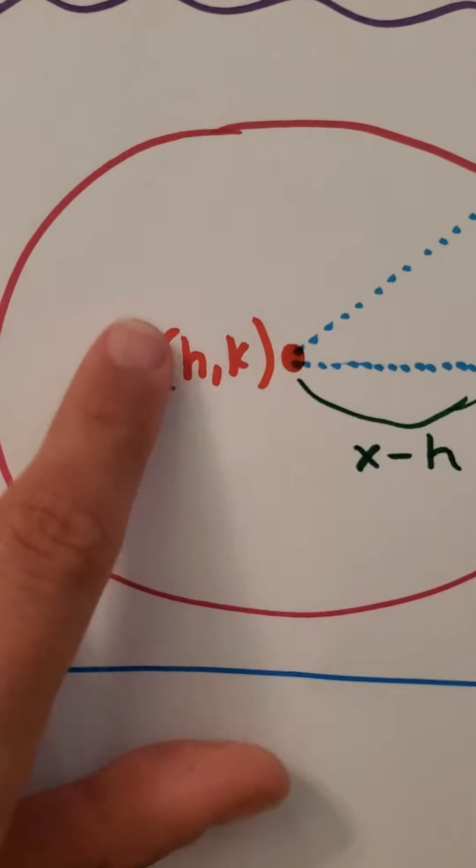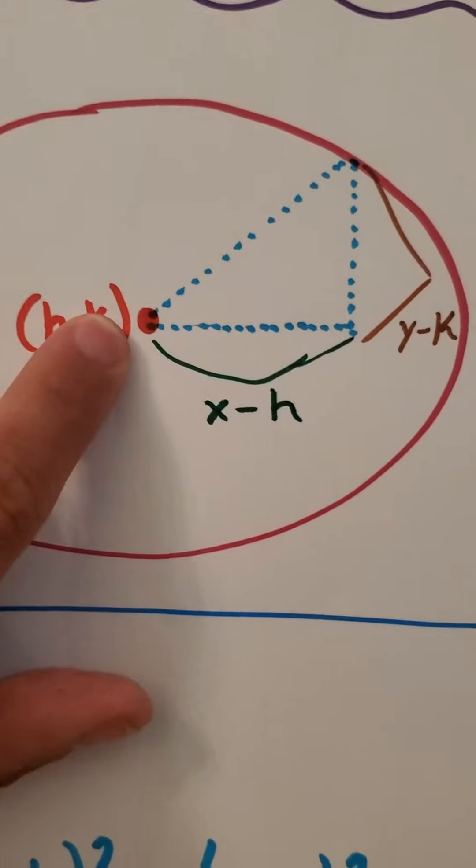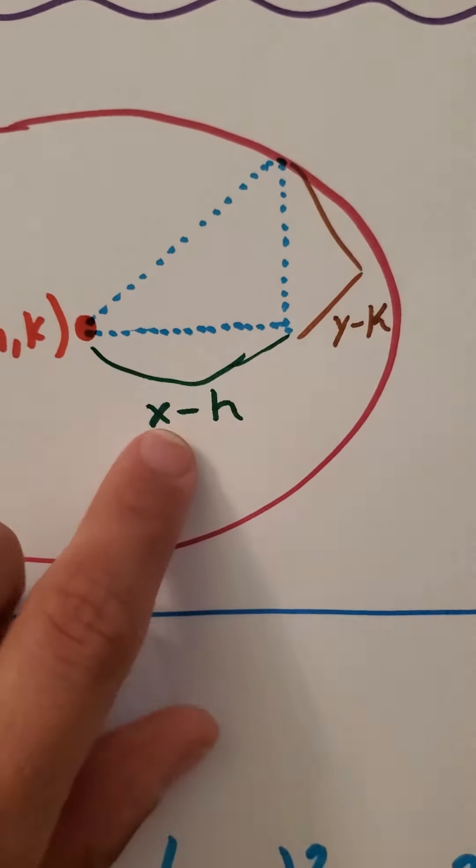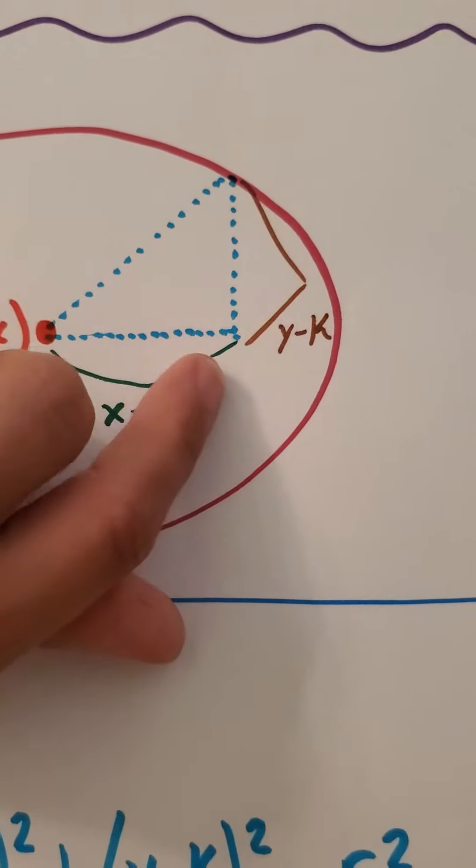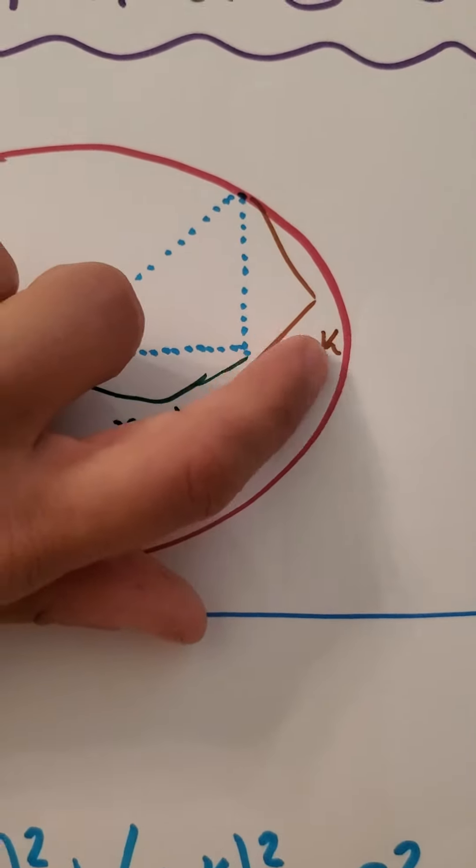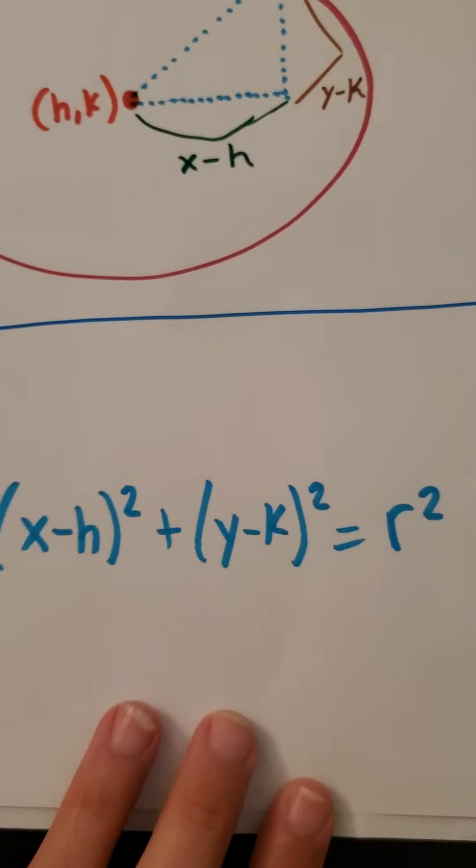We have h, k. Then this side, this bottom right here, x minus h. This side of the right angle of our triangle, y minus k.